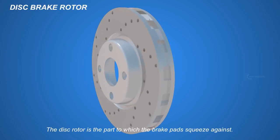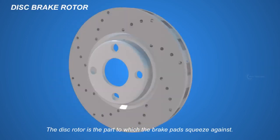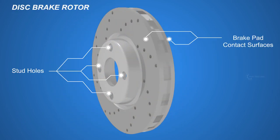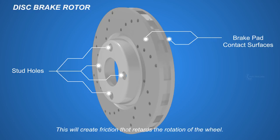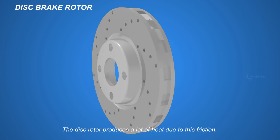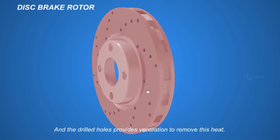The disc rotor is the part to which the brake pads squeeze against. This will create friction that retards the rotation of the wheel. The disc rotor produces a lot of heat due to this friction, and the drilled holes provides ventilation to remove this heat.